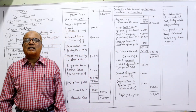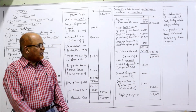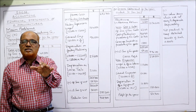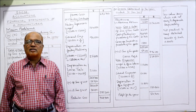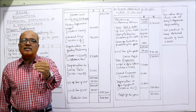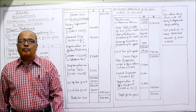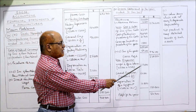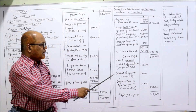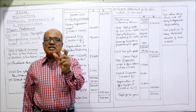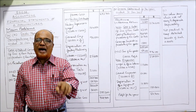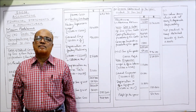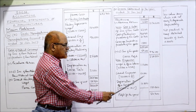Net revenue minus cost of sales gives gross profit: 2,38,500. Now other expenses: wages and office salaries — from the trial balance, paid amount is 1,08,700. From adjustments, accrued wages are 4,300. Total wages and office salaries: 1,13,000. Then general expenses: 1,60,000 from the trial balance, of which two-fifths goes to office — so 1,60,000 × 2/5 = 64,000.